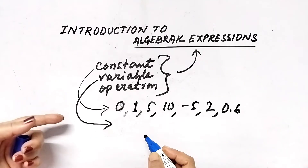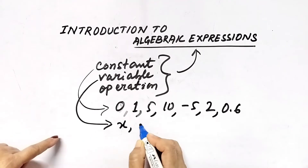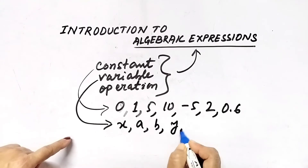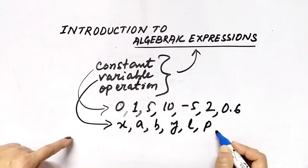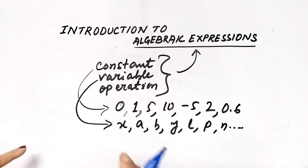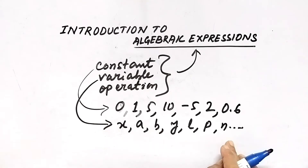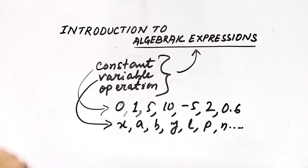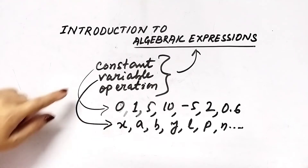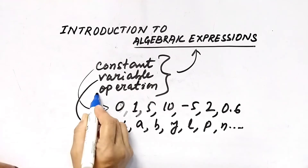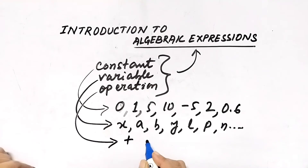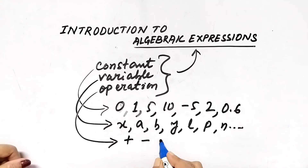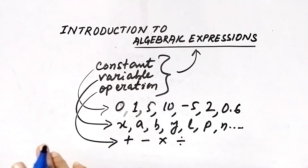A variable means whenever we assign a symbol to express one unknown quantity or unknown value — for example, x, a, b, y, l, p, n, etc. Generally we use small letters of the English alphabet. All these symbols have no particular quantitative value, but we assign them to express an unknown quantity. That is why these are called variables.